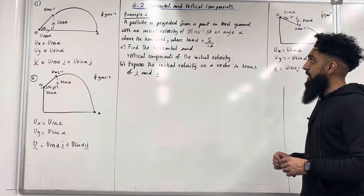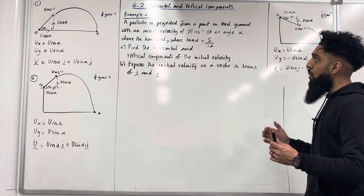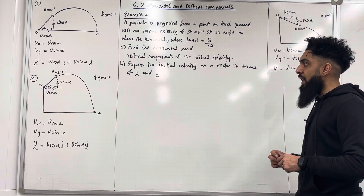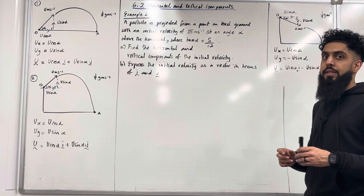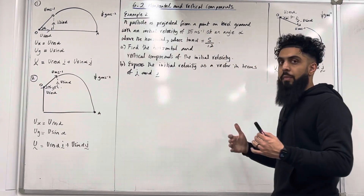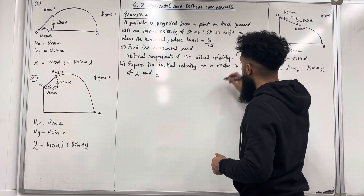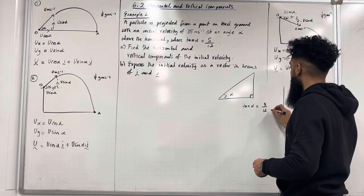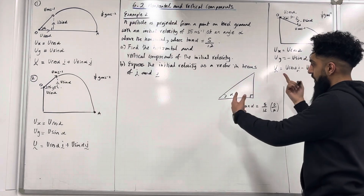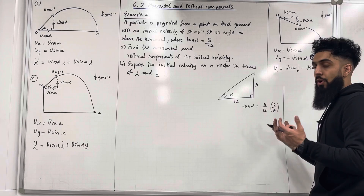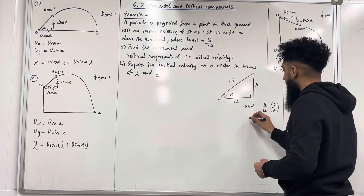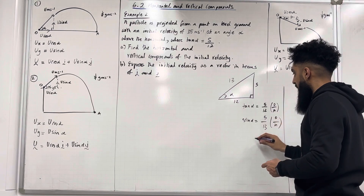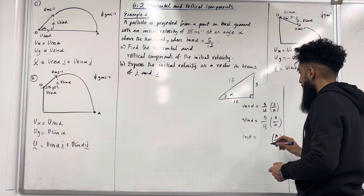Here is example two. A particle is projected from a point on level ground with an initial velocity of 35 meters per second at an angle alpha above the horizontal, where tan alpha equals 5 over 12. Part A: find the horizontal and vertical components of the initial velocity. Part B: express the initial velocity as a vector in terms of i and j. Whenever you have a trig ratio involved, you need to form a right-angle triangle. So tan alpha equals 5 over 12, which is opposite over adjacent. We label opposite as 5 and adjacent as 12. Using Pythagoras' theorem, the hypotenuse is 13. So sin alpha equals 5 over 13 and cos alpha equals 12 over 13.